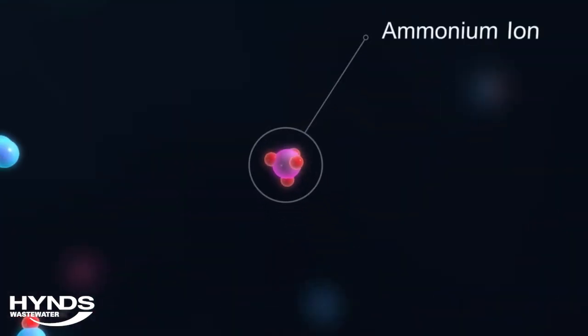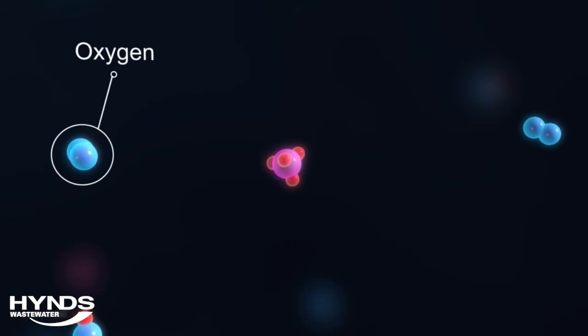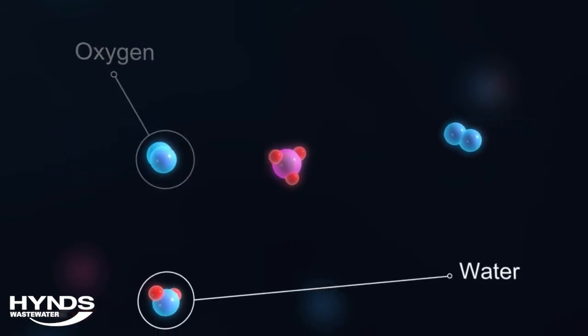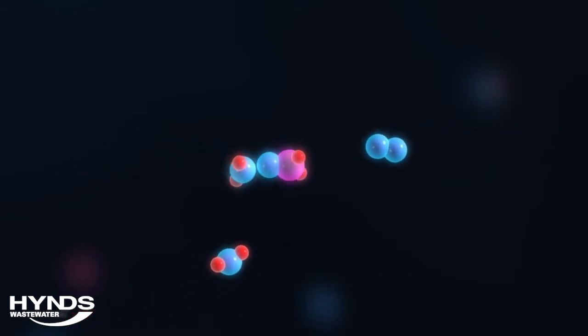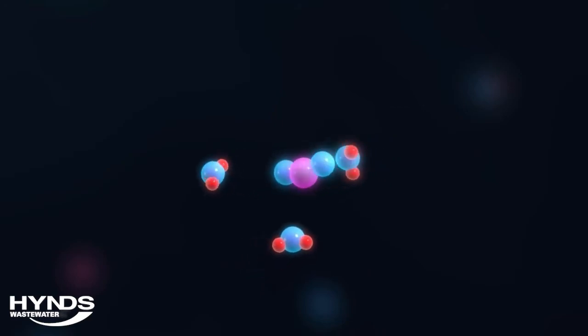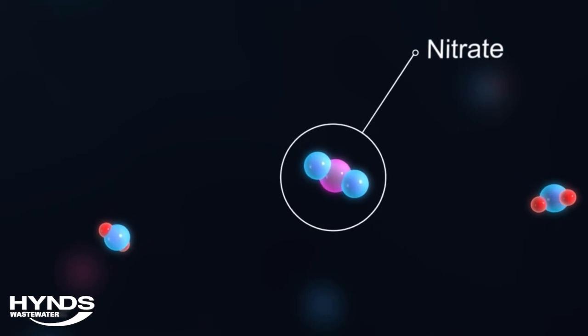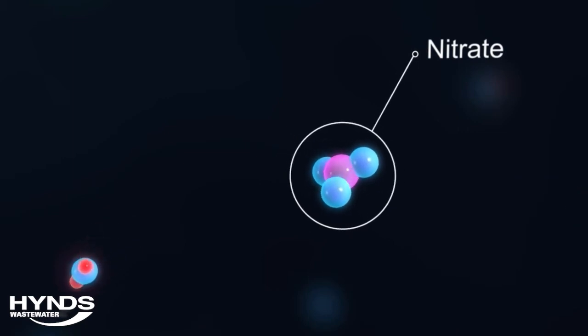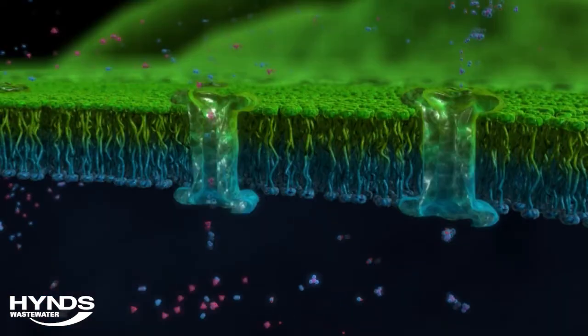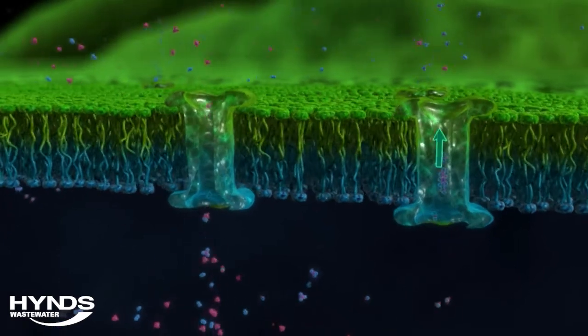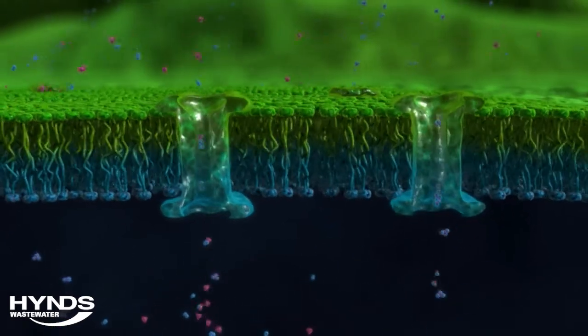Once inside the cell walls, ammonium ions react with the oxygen and water in the cell to form nitrates and nitrites. The new particles are then transferred back through the cell wall and continue their journey through the system.